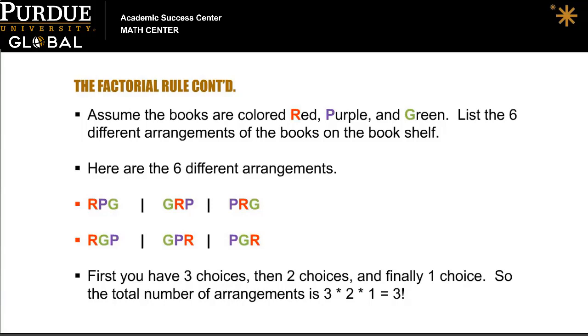Start by putting the red book on the shelf first. We could follow it with the purple and green to get red, purple, green. Or we could follow the red with green and then purple. So there are two arrangements possible if you put the red book on first.